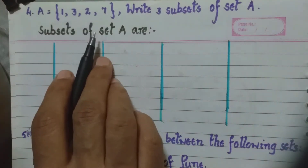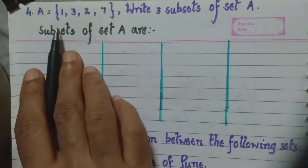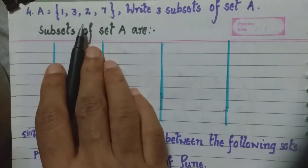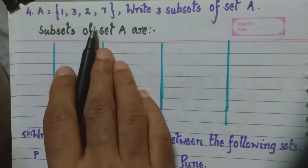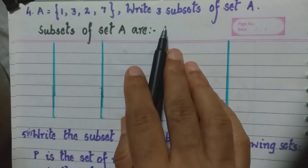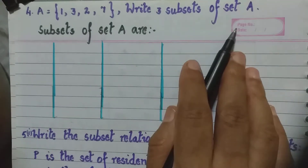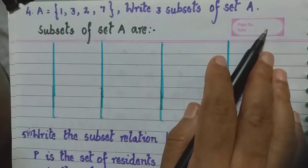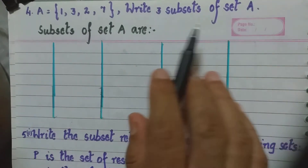Let us see the fourth question. Set A consists of the elements 1, 3, 2 and 7. We have to write three subsets of set A.